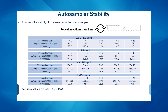Once samples are prepared, they are ready to be placed in the auto-sampler. Because your sample sequence includes calibration standards and QCs, it is very important to ensure that samples sitting in the auto-sampler remain stable during that time. A sample sequence would include calibration standards, QC samples, and prepared samples. We created quality control samples at four different concentration levels and calculated accuracy at each time point. We conducted this study for 15 hours and determined that all accuracy values were within 85 to 115 percent.